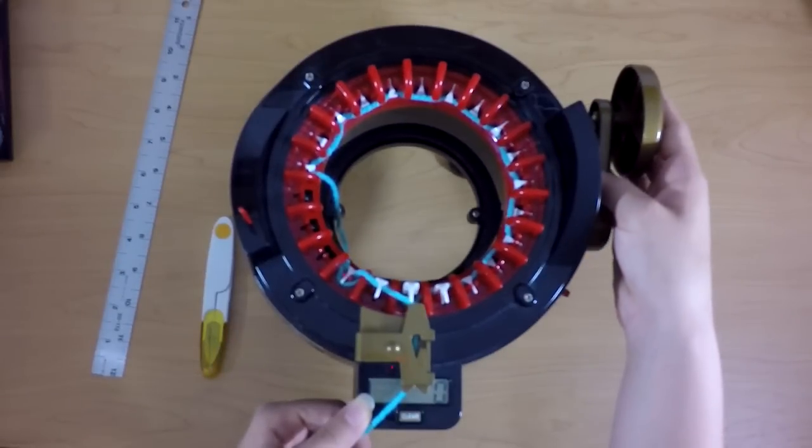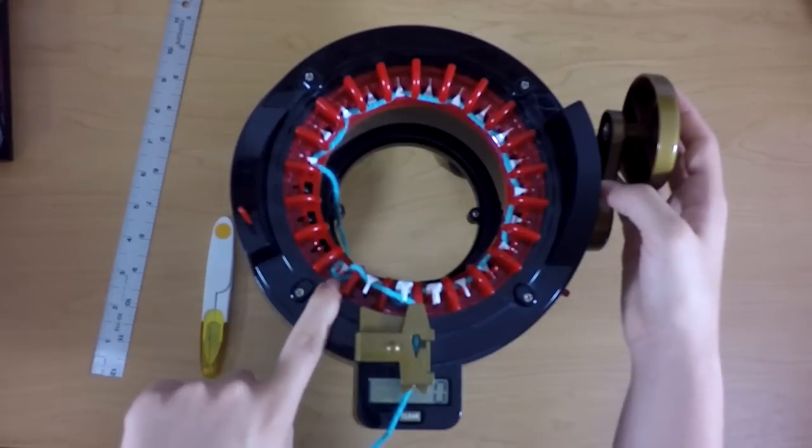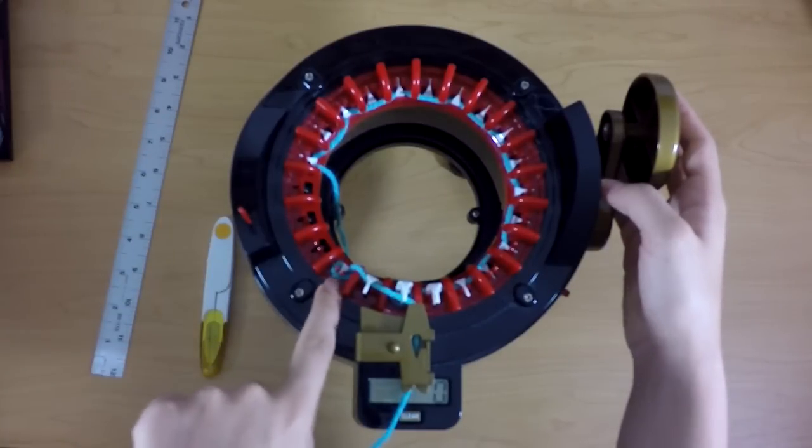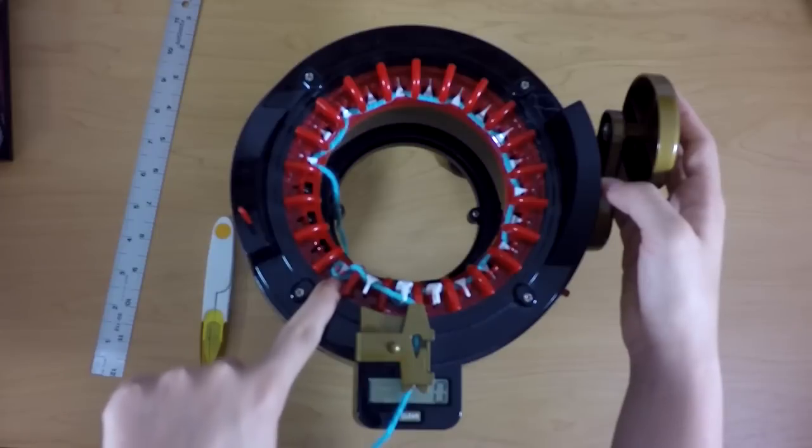So as you can see, that first needle hooked the yarn and brought it down below this strand right here that was in front of the needle before.